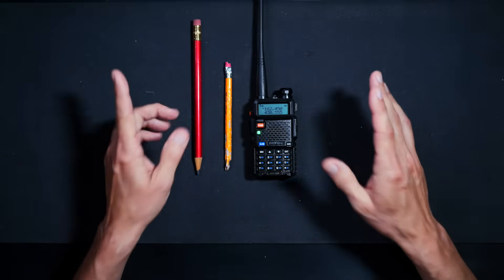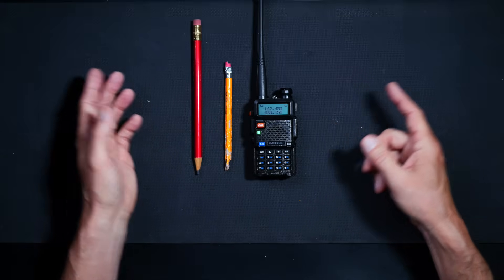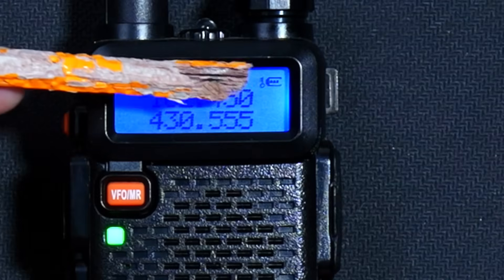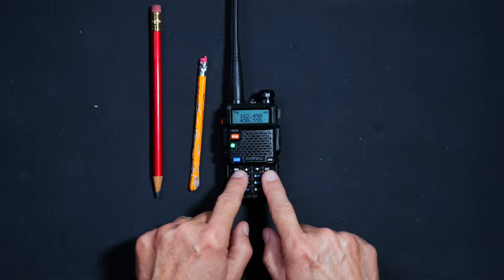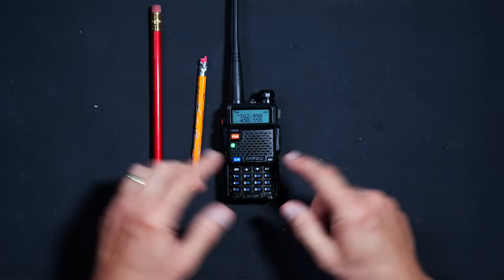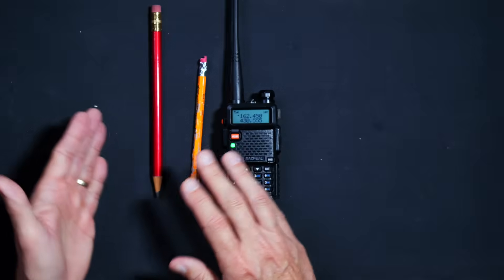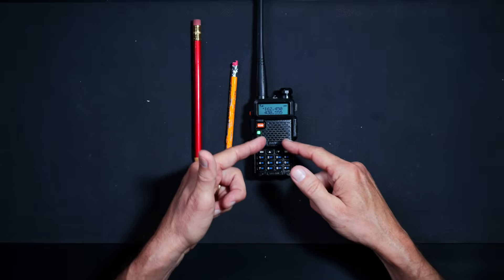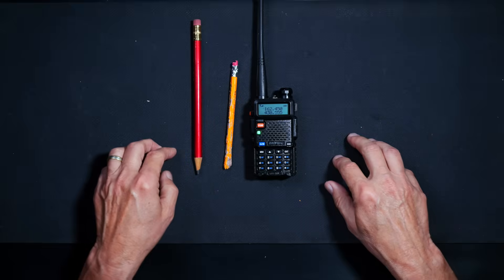The frequency will remain there until you type in something else while in VFO mode. To prevent that from happening accidentally, you can optionally lock the keypad by pressing and holding down the hashtag button, resulting in the locked icon showing again. You can also save this frequency as a channel so that you can quickly and easily switch to other pre-saved frequencies and then come back to this one. To do that, be sure to watch my video on how to do that.